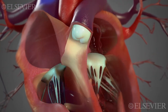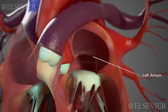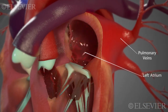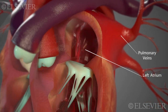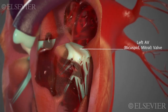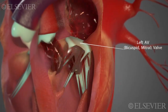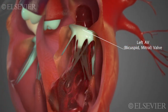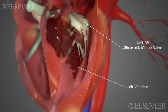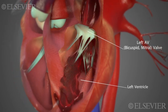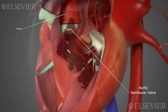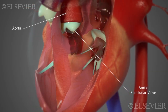The left atrium receives oxygenated blood from the pulmonary veins. The blood pushes open the left atrioventricular bicuspid or mitral valve and enters the left ventricle. The left ventricle pumps this blood through the aortic semilunar valve into the aorta so it can be transported to the rest of the body.